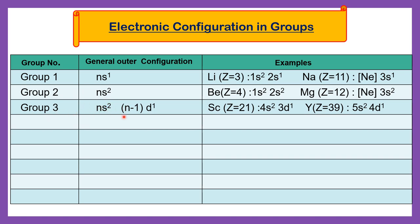Group number 3 has general outer electronic configuration ns2 (n-1)d1. For example, scandium (atomic number 21) has electronic configuration 4s2 3d1 — here 3 appears because n=4, so n-1=3. Another example, yttrium (atomic number 39) has outer electronic configuration 5s2 4d1 — s subshell having two electrons, d subshell having one electron. Same electronic configuration pattern.